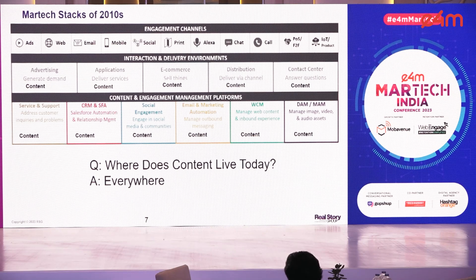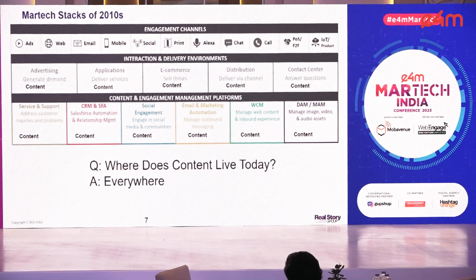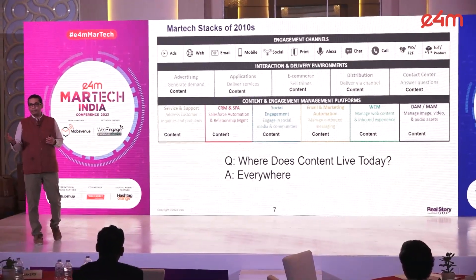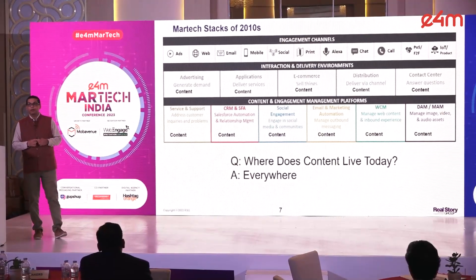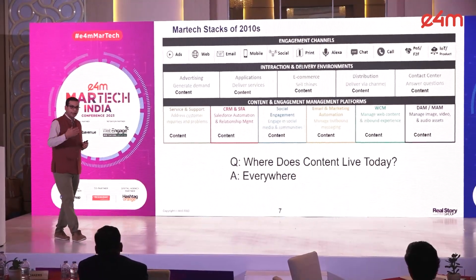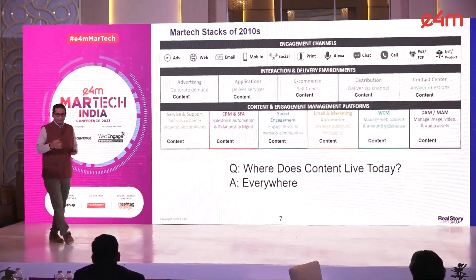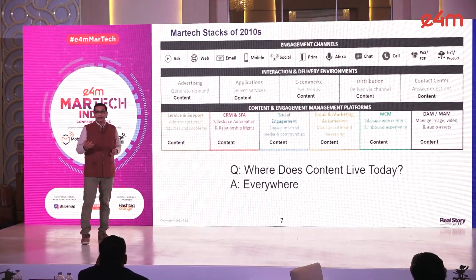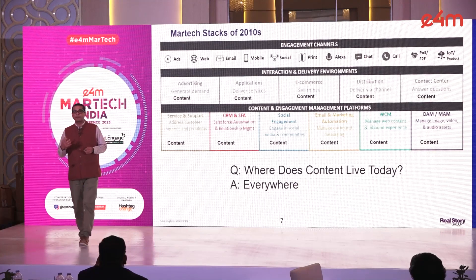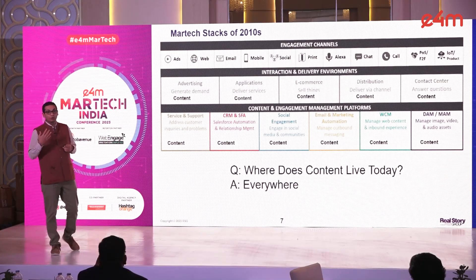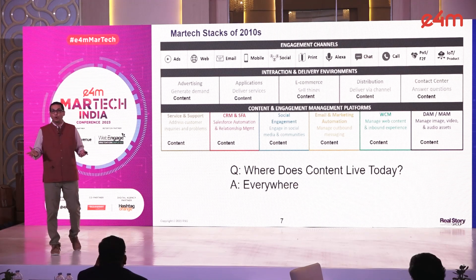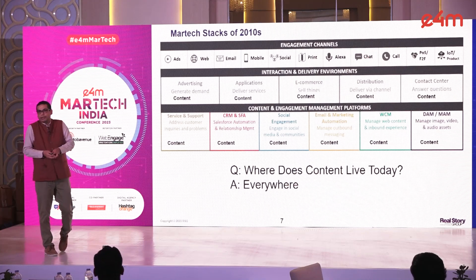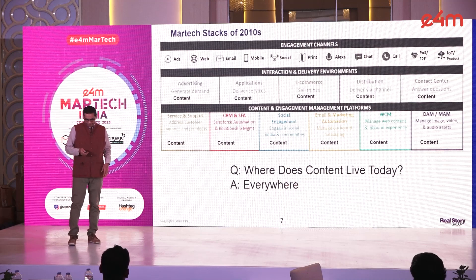The same logic applies to content. If you want to create content for your website, your website has its own content repository. Your email marketing system has its own content repository. Your e-commerce website has its own. Content is everywhere. The same goes for AI — we had a session on ChatGPT, and almost all products now have their own AI capabilities. If you use AI from each product separately, there is no way to ensure consistent output across channels since they use different models and different LLMs. That's a major problem.